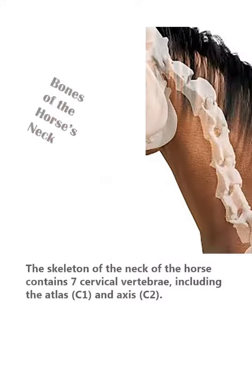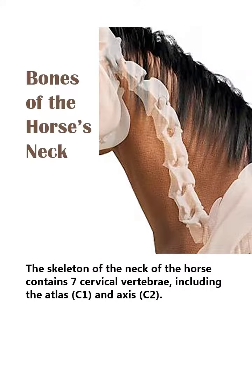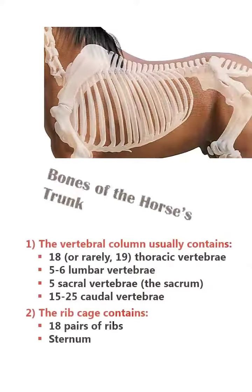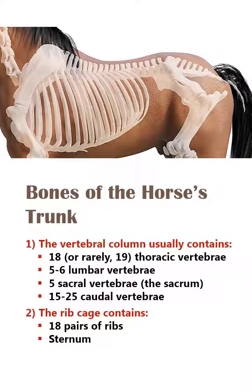The skeleton of the neck of the horse contains 7 cervical vertebrae, including the atlas, the first one, and the axis, the second one.